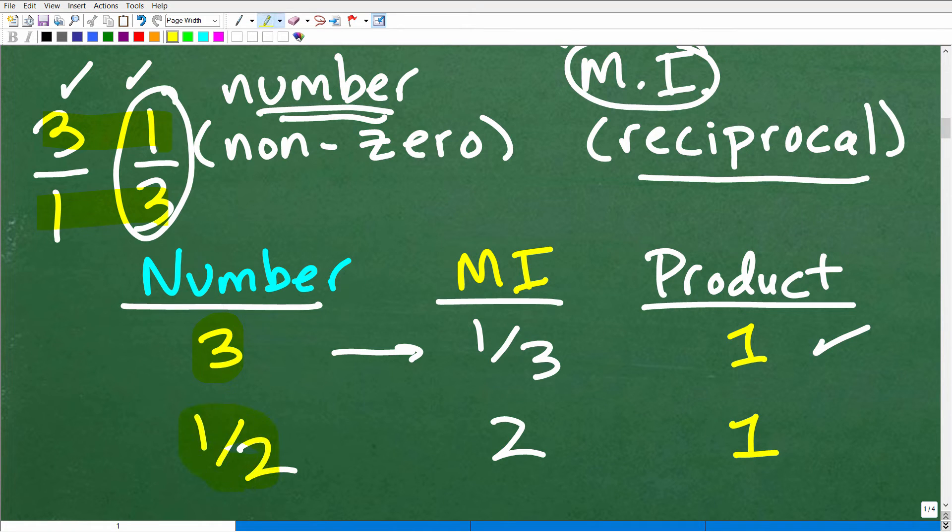So let's take a look at this little example. If I told you here is our number 1 half, give me the multiplicative inverse. All we need to do is to flip 1 half upside down, so that would be 2 over 1 or 2. So 2 is a multiplicative inverse of 1 half, and you can verify that because 1 half times 2 is 1.